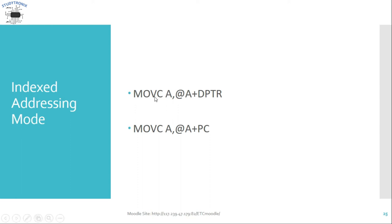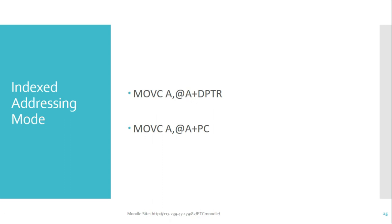Next is indexed addressing mode. There are two instructions: MOVC A, @A+DPTR and MOVC A, @A+PC. The 'C' in MOVC stands for code memory, so these instructions are used to access data from code memory. The base address is stored in DPTR or PC, and the accumulator A serves as the index — that is, the offset from the base address. When base and index are added, they form the effective address from which data is copied to the accumulator.